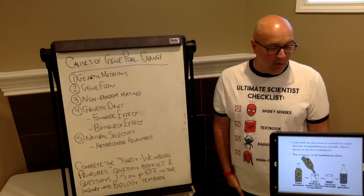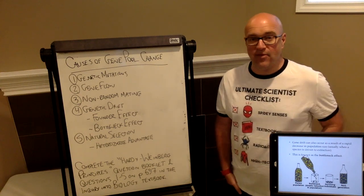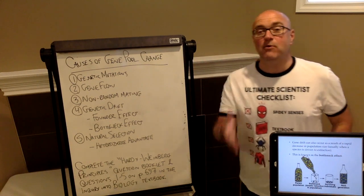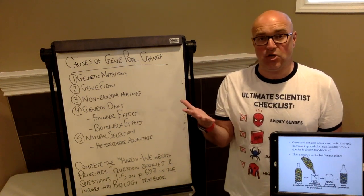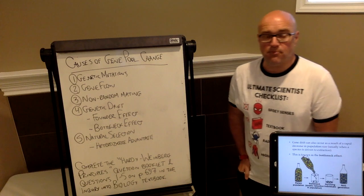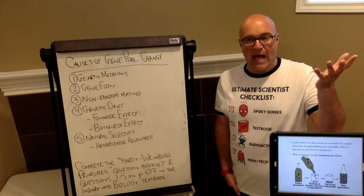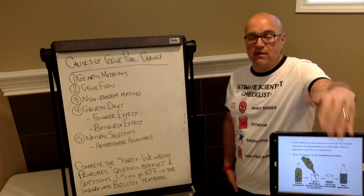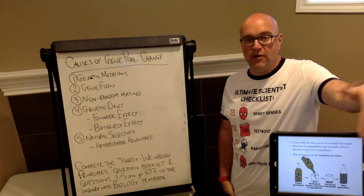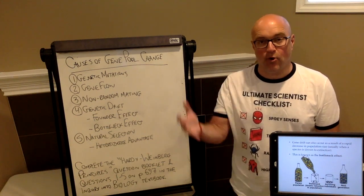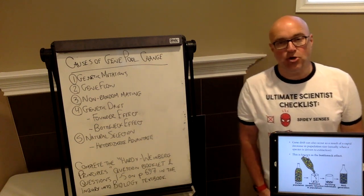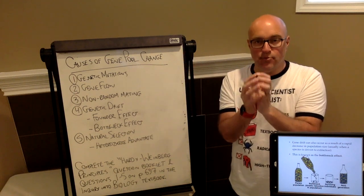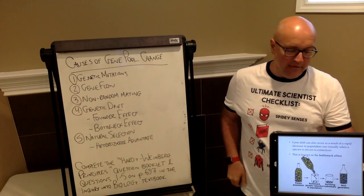Because there's only a few members of the population that are left, only the alleles that survived that are in the remaining population are going to be represented when we try to bring that population back to a larger size. In the original large population, you had maybe three variations of the allele - yellow, red, and blue. When we only have a few organisms left in the population after the disaster, you're left now with only certain alleles.